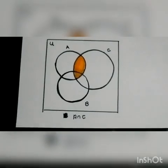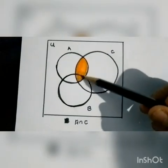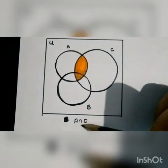In this Venn diagram, this region represents A intersection C.